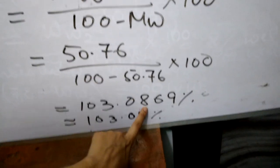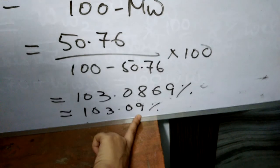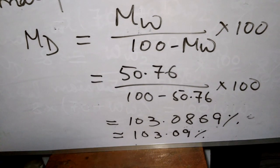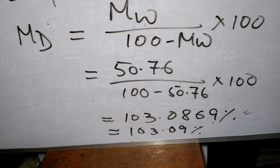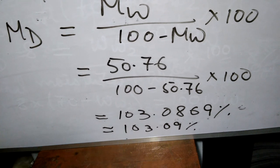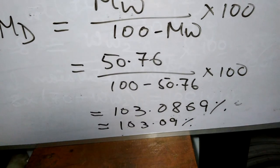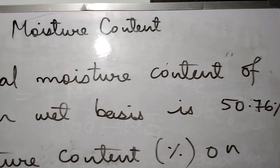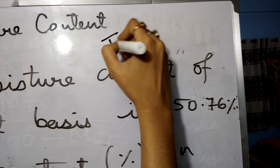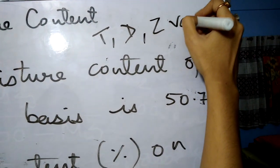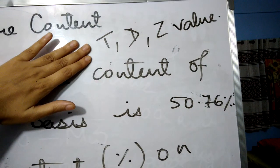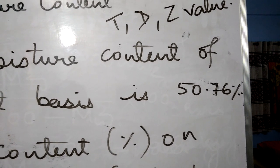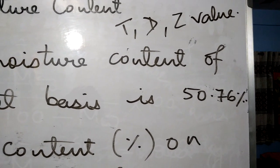If anyone writes 103.08, the answer will be wrong — the correct answer is 103.09%. Today in this video we discussed the concepts of moisture content and solved two numericals. In the next video we will discuss microbiology topics including T value, D value, and Z value. Practice questions based on this concept, and if you have any queries send them in. Like, share, and subscribe — thank you all.